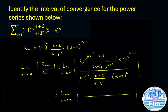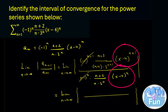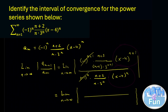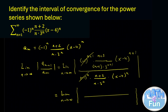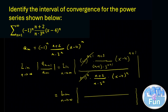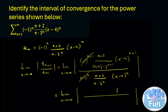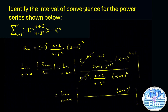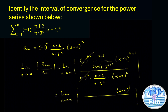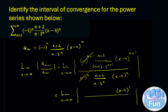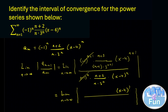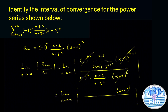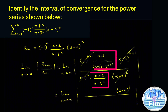Now let's simplify x minus 4 to the power n plus 1 over x minus 4 to the power n. If you divide them you get x minus 4 to the power 1. You can split x minus 4 to the power n plus 1 as x minus 4 to the power n times x minus 4 to the power 1; then x minus 4 to the power n cancels.